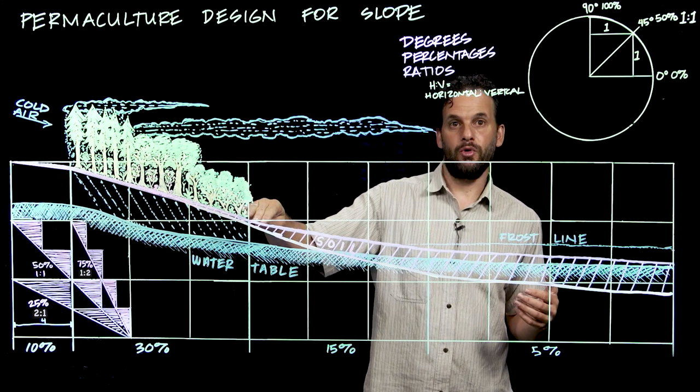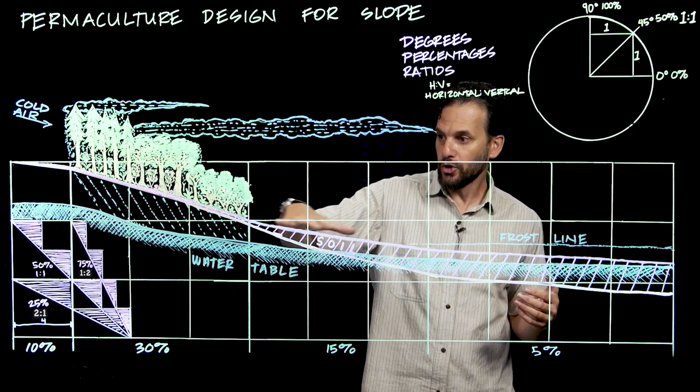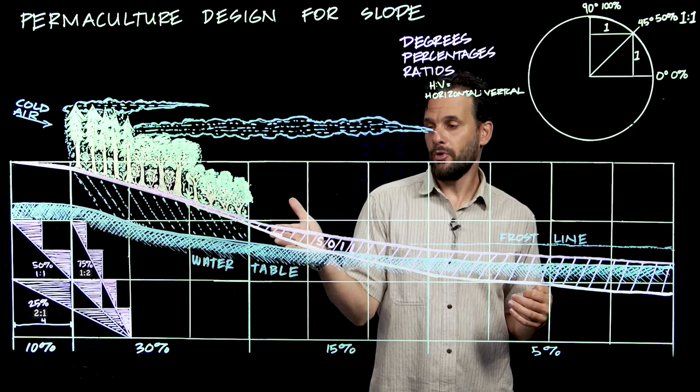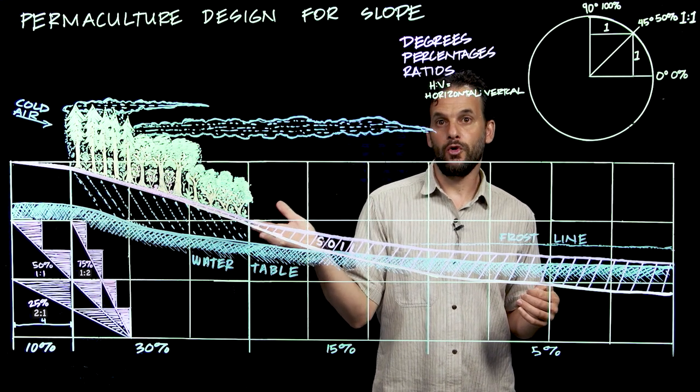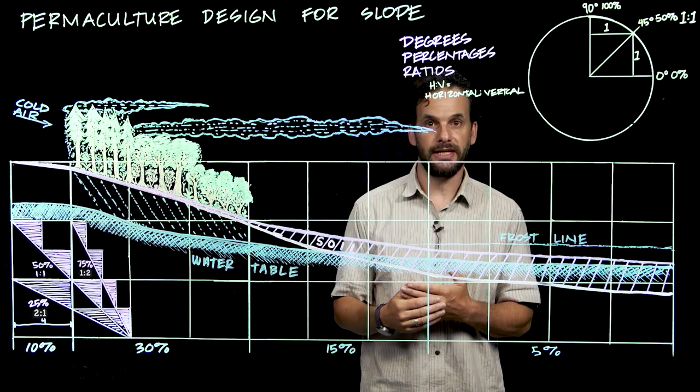This inflection point, where the slope goes from steeper to more gentle, right here, this is called the key point, which is a term that's coined by P.A. Yeomans, the Australian inventor of the key line design system.